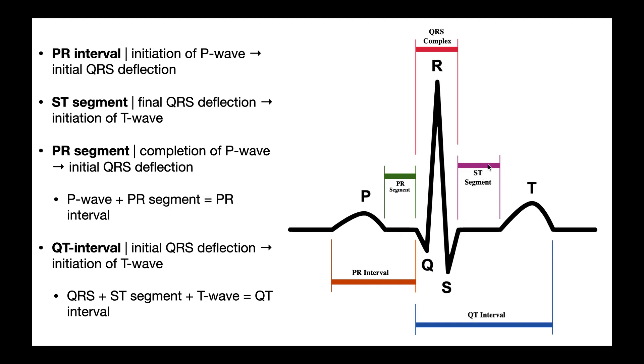Then we have in purple the ST segment. The ST segment starts at the final QRS deflection. So once this S deflects back upward right at the end of the QRS, that's the start of the ST segment. Then the end of the ST segment is basically right where the T wave starts. Sometimes where the T wave starts can be a little bit ambiguous, so the ST segment can be a little bit difficult to estimate, but it's from the end of the QRS right at the end of the S deflection upward to the start of the T wave.